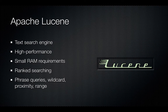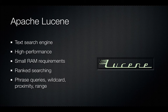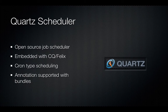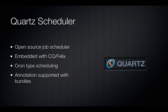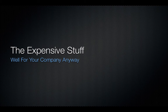Apache Lucene is a very common search engine in industry — it's text-based search, high performance, with small RAM requirements. It supports ranked searching, meaning it supports multiple groups of searching ranks — phrase queries, wildcards, proximity range. Then there's Quartz Scheduler, essentially a cron system snapped into Felix. When it comes time to do archiving, backups, or importing, you're going to end up writing code against Quartz. It uses cron-type scheduling, so if you know cron-tab timestamps it'll be familiar to you, and it's annotations-supported by SCR bundles — that'll make more sense after we cover Apache Felix.